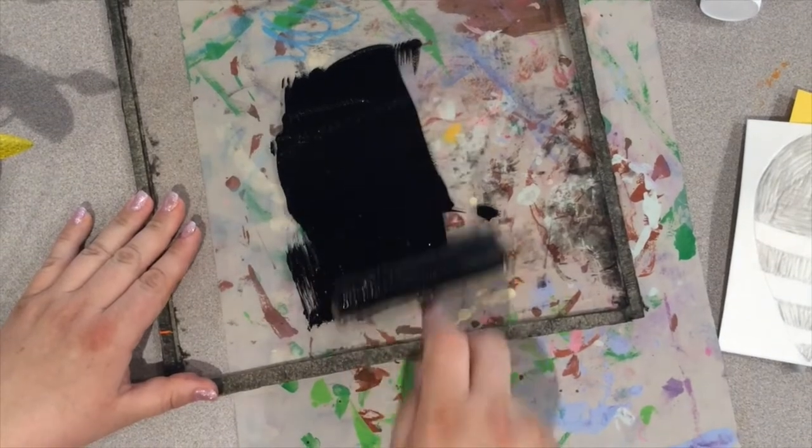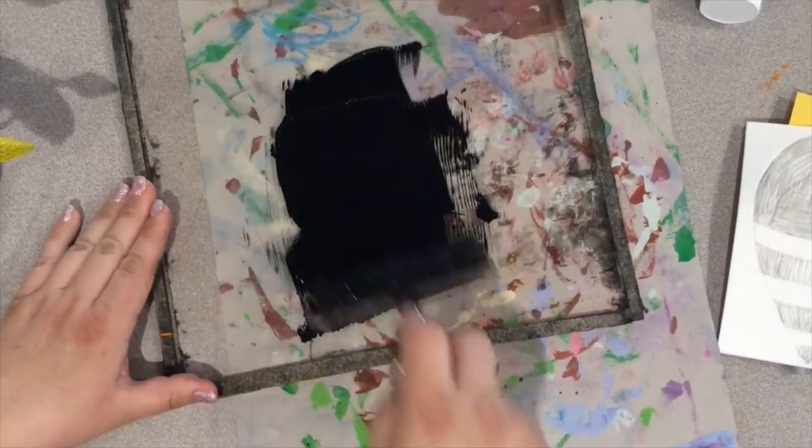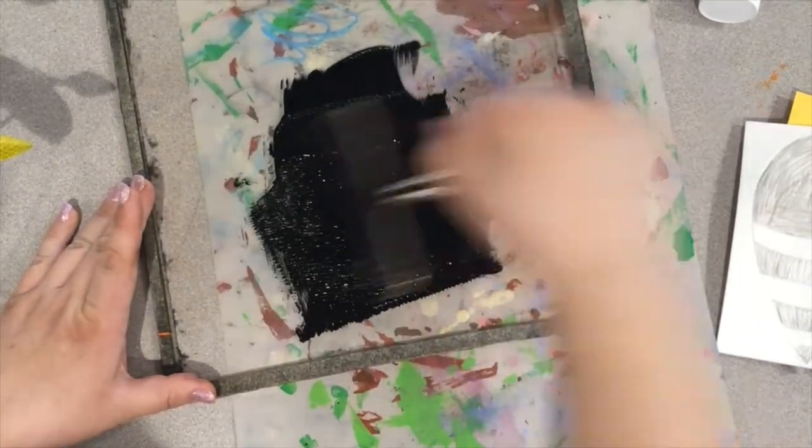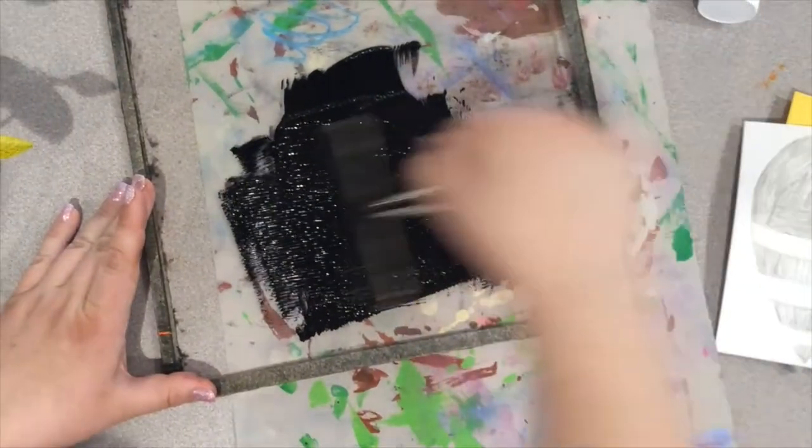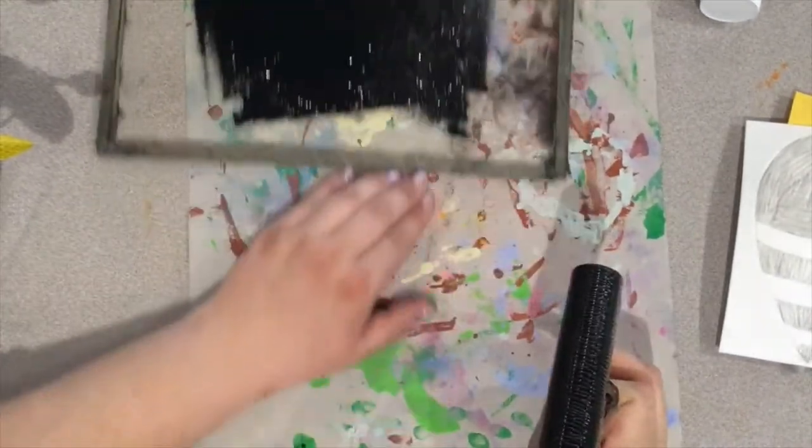Forward, pick it up, bring it back. You want to try to get ink all over your brayer. Don't just roll back and forth because the ink isn't going to distribute all over the roller.